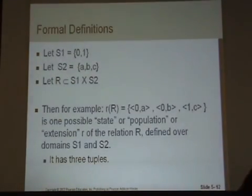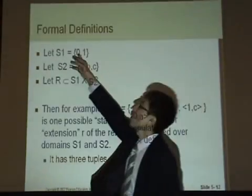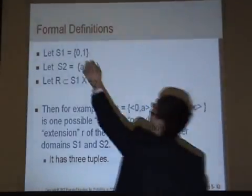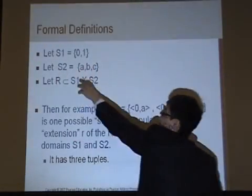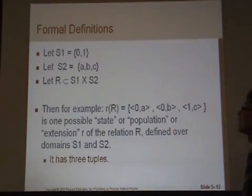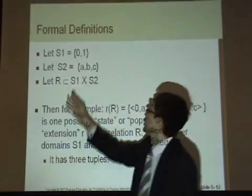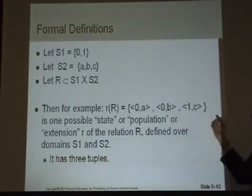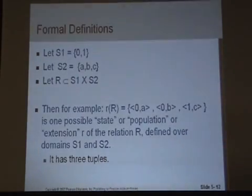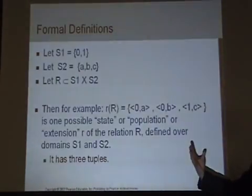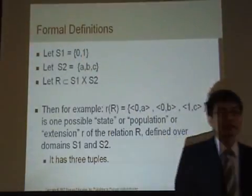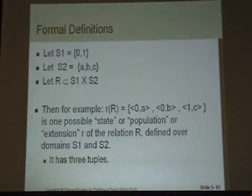For example, we have two domains. S1 has all possible values: 0 or 1. Another domain, S2, has A, B, C. So we can select values only from those domains. Relation R is the combination — X means it's a Cartesian product, all possible combinations. So, for example, (0, A) can be a tuple, (1, A) can be a tuple. We can make this kind of relation. How many tuples do we have? 3. But if we put (2, A), that cannot be possible because 2 is not in the domain — it's out of the domain, kind of like an out-of-data-type error.